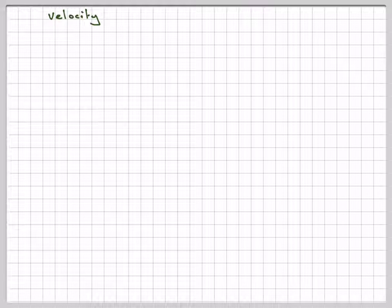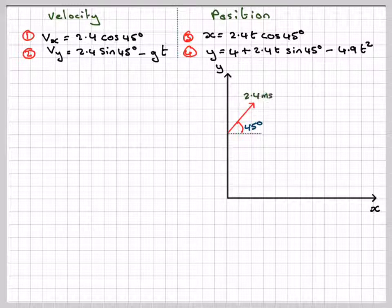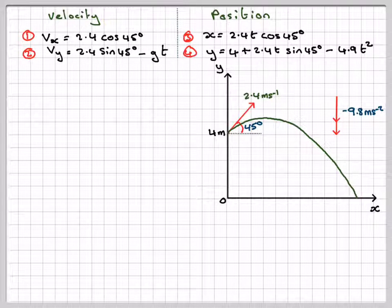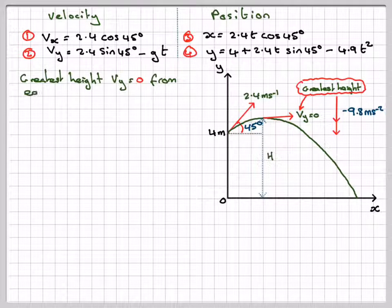Write them out again. And let's draw the graph again as well. Right, we want the greatest height. Now the greatest height will be when the vertical velocity is equal to 0. So the greatest height happens when vy equals 0.